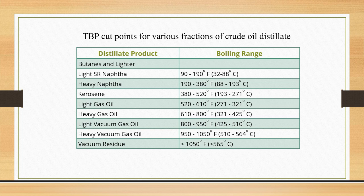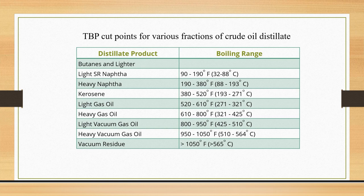Now we will study the TBP cut point for various fractions and the experimental values. For light straight-run naphtha, the boiling range comes out to be 90 to 190 degrees Fahrenheit, indicating it is the lowest boiling fraction. Heavy naphtha is slightly higher at 190 to 380 degrees Fahrenheit. Kerosene comes around 380 to 520 degrees Fahrenheit, light gas oil around 520 to 610 degrees Fahrenheit, and heavy gas oil around 610 to 800 degrees Fahrenheit. Light vacuum gas oil is around 800 to 940 degrees Fahrenheit, and heavy vacuum gas oil around 950 to 1050 degrees Fahrenheit.